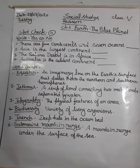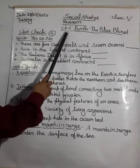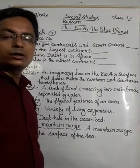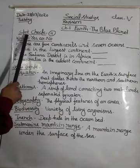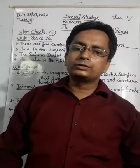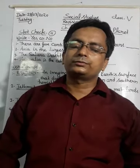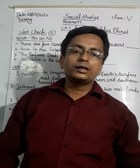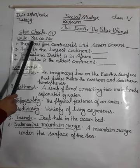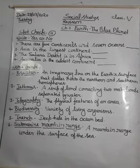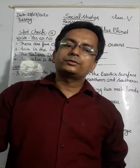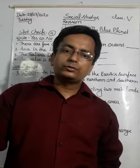We are starting with the first lesson, that is 'The Earth - The Blue Planet.' First of all, we will see the Spot Check, which is inside the lesson. In the Spot Check, you have to write yes or no — if the sentence is right, you write yes; if it is not right, you write no.